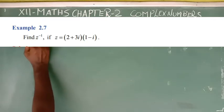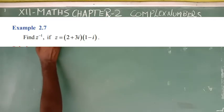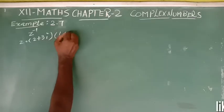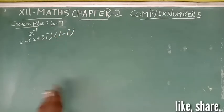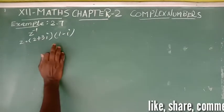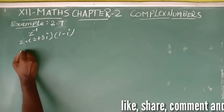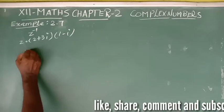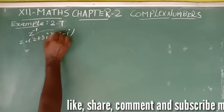Z is equal to 2 plus 3i into 1 minus i. First, we will simplify Z, then we can find the inverse value.